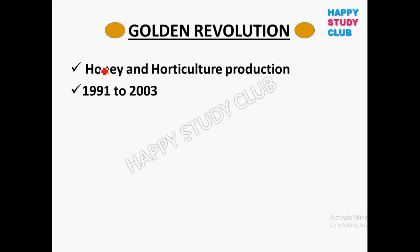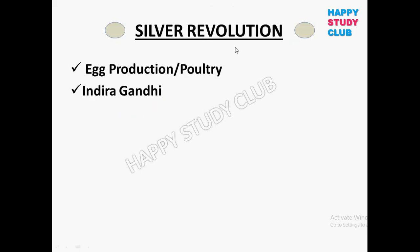The Golden Revolution is associated with honey and horticulture production. Horticulture is related to all vegetable and fruit production. The period when the Golden Revolution was started is 1991 to 2003. Next, the Silver Revolution is associated with egg production and poultry, and Indira Gandhi is known as the father of the Silver Revolution.